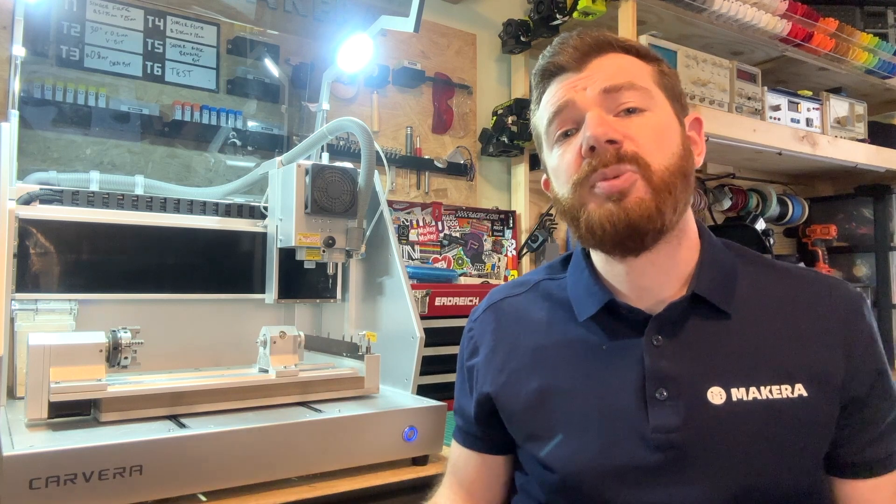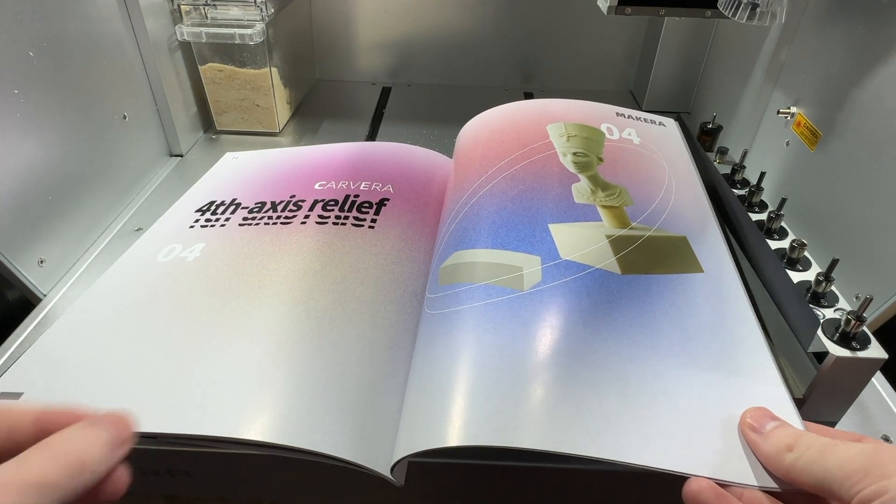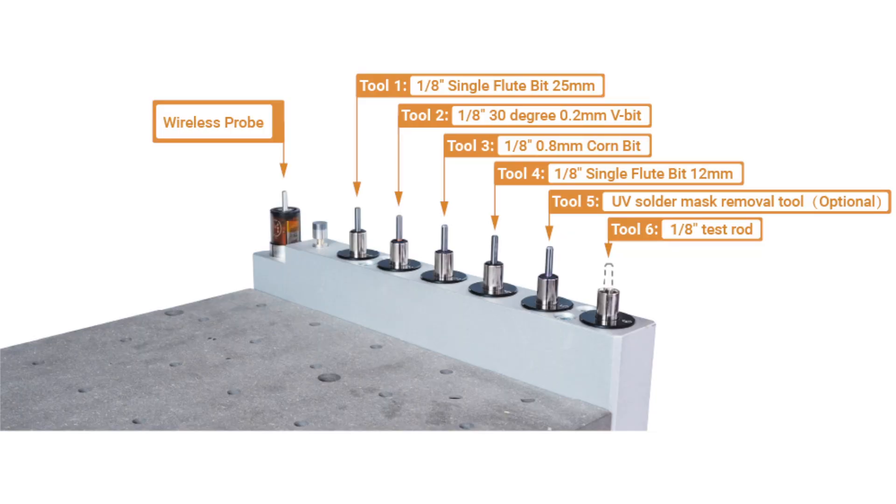It's also important that we load our bits in the correct order which correspond with the example projects as shown in the guidebook. Specifically for the fourth axis relief project we are looking at in this video, we will only be needing tools one and two, but this order can be utilized for all the example project files.